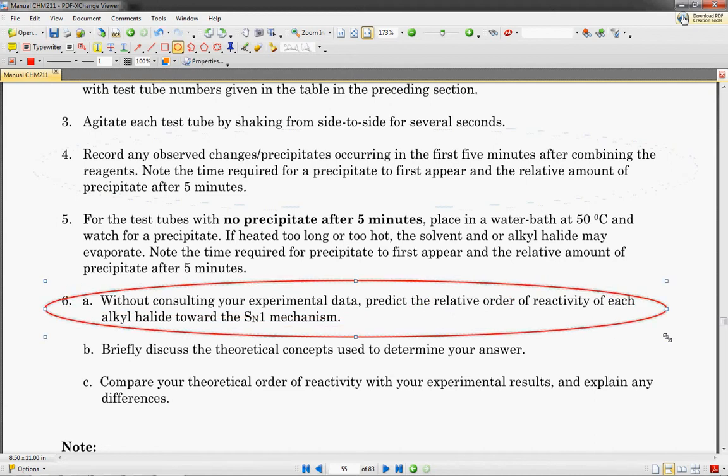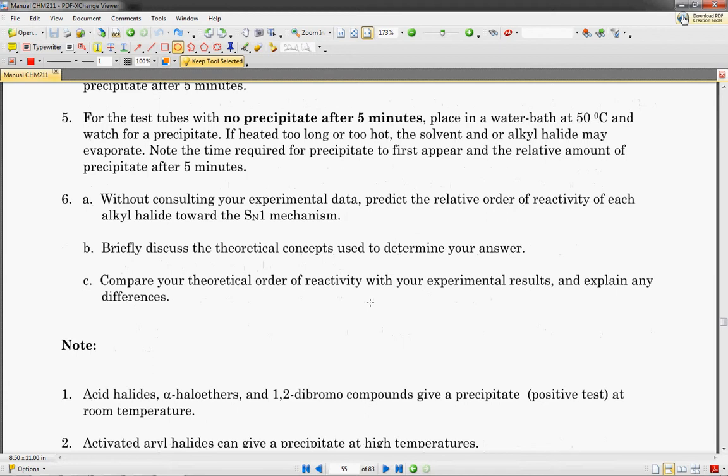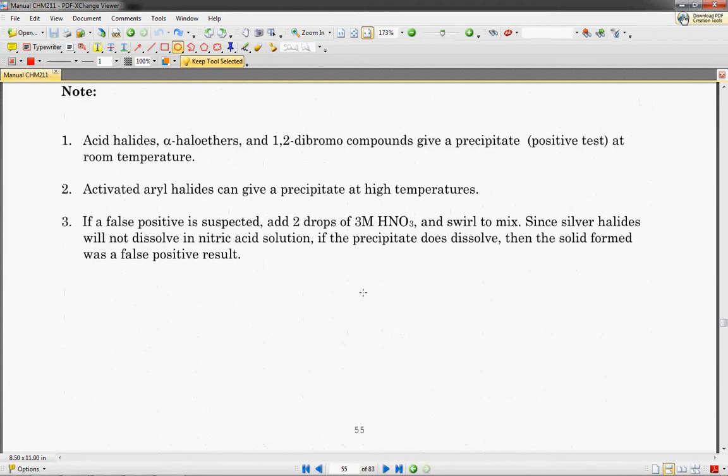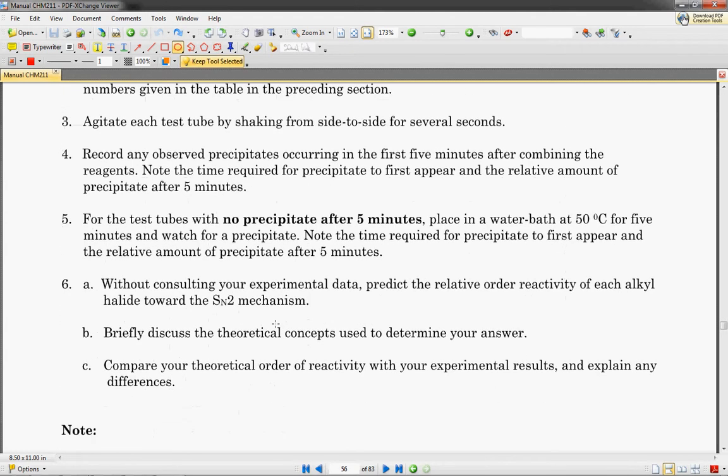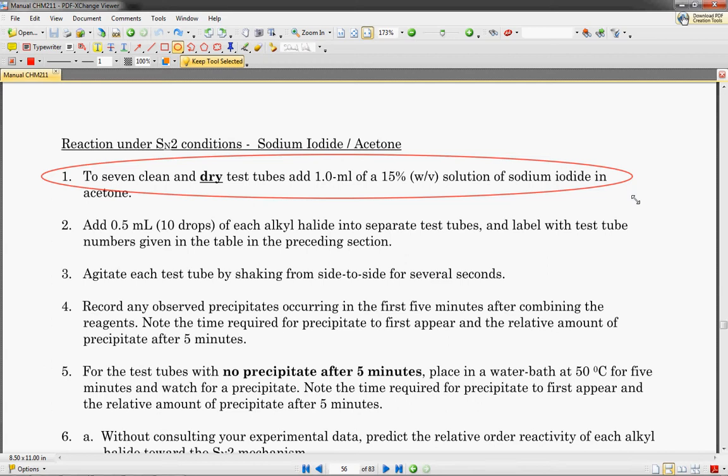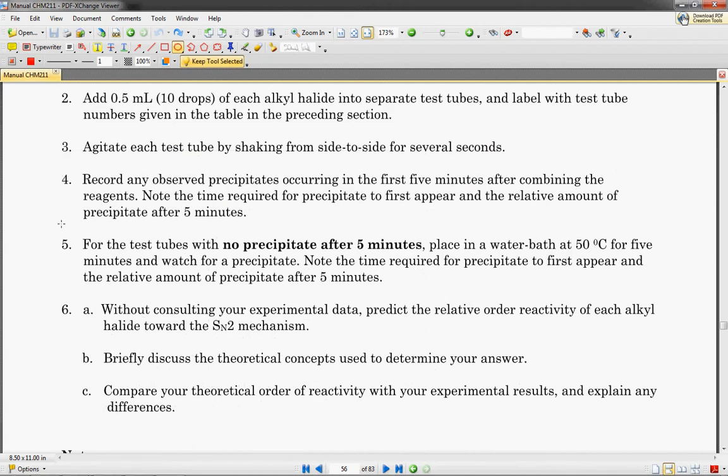Before you look at the experimental data, you're going to try to predict the order of reactivity of each alkyl halide towards either SN1 or SN2. Then you're going to repeat the procedure under conditions more favorable for SN2 conditions, and that's going to be with sodium iodide and acetone. It's basically the same thing. You've got seven dry test tubes.